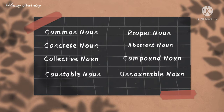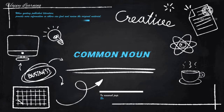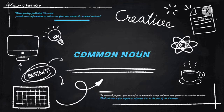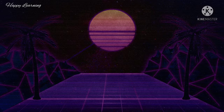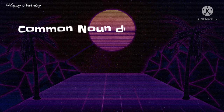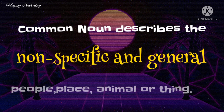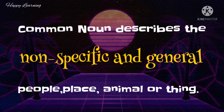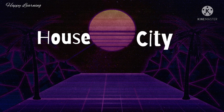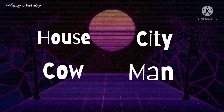First comes the common noun. A common noun describes non-specific and general people, places, animals, or things — that is, it describes anything in general. For example: house, city, cow, man, etc.